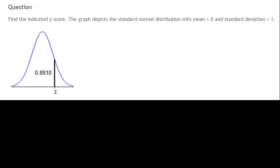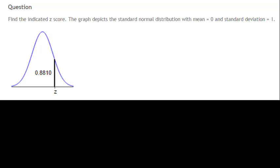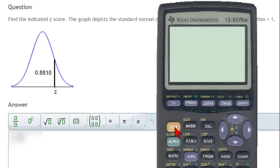In a more traditional non-technology-oriented statistics course, z-score tables would be used to find the answer. However, in this course, we will be using the TI-83 or TI-84 calculator as opposed to z-score tables.